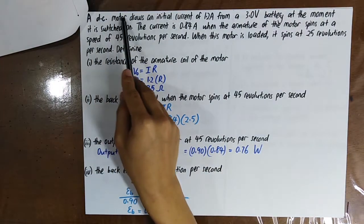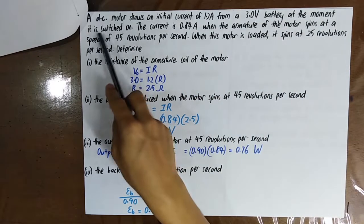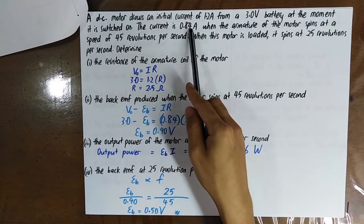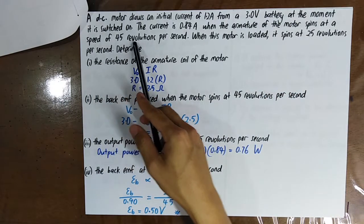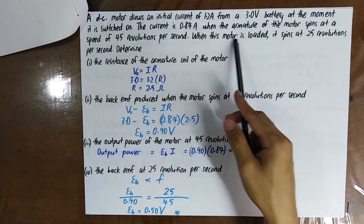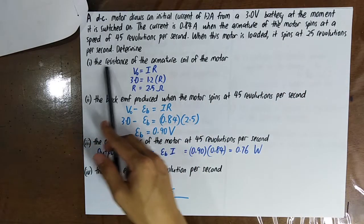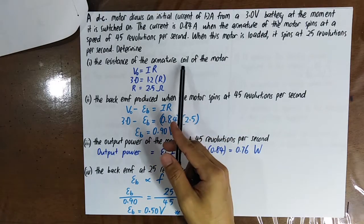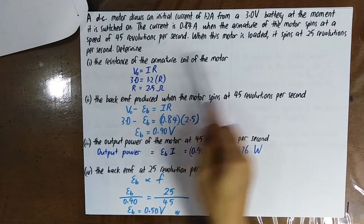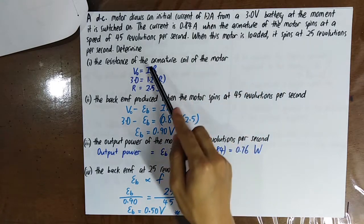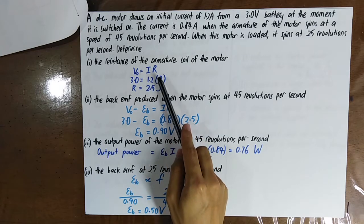A DC motor draws an initial current of 1.2 A from a 3 V battery at the moment it switches on. The current is 0.84 A when the armature spins at 45 revs. When loaded, it spins at 25 revs. Initially the EMF is 3 V and the current is 1.2 A — the maximum current — so you can calculate the resistance.